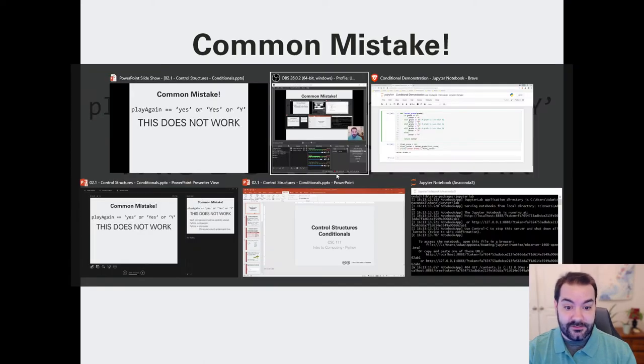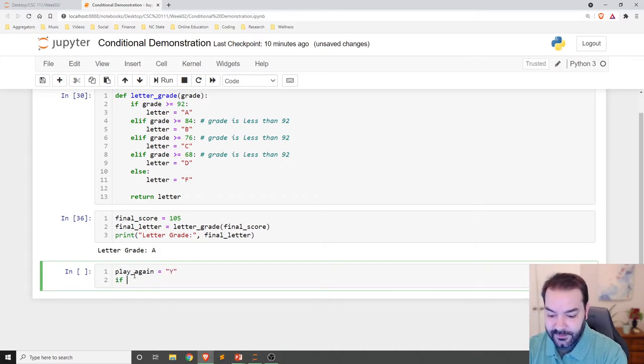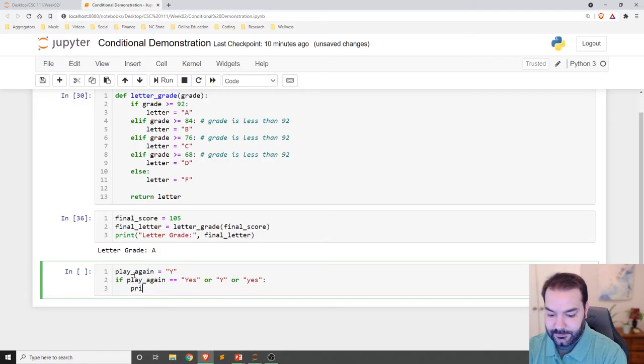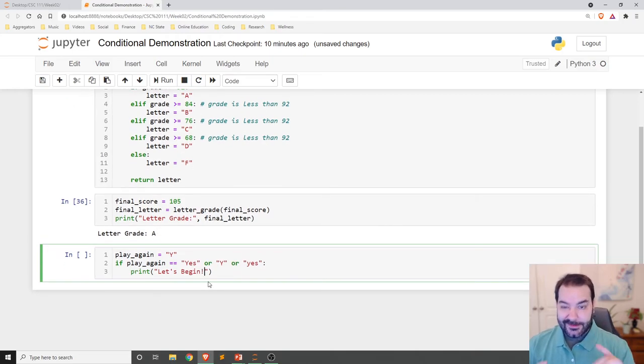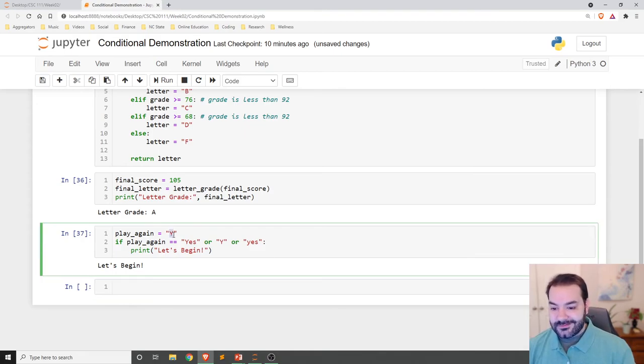And even just to see this in action. So let's say, again, play again equals yes or yes or yes. We'll say, let's begin. Okay. Now, more to my point. When I run this code, it's going to say let's begin. Oh, that means that I magically it works, right? Well, technically, no.